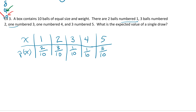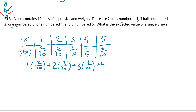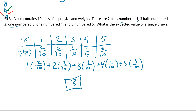We take each number and multiply it by its probability: 1 times 2/10, plus 2 times 3/10, plus 3 times 1/10, plus 4 times 1/10, plus 5 times 3/10. Add all of those up and you're going to end up with 3. So 3 is the expected number on the ball after enough draws.